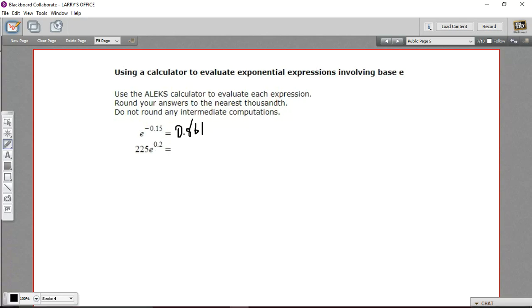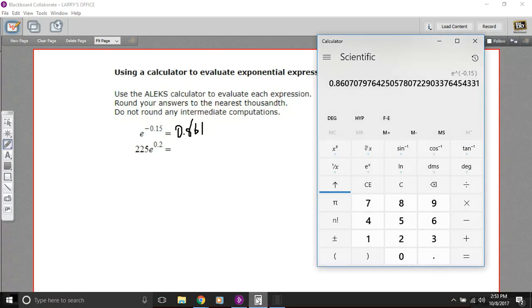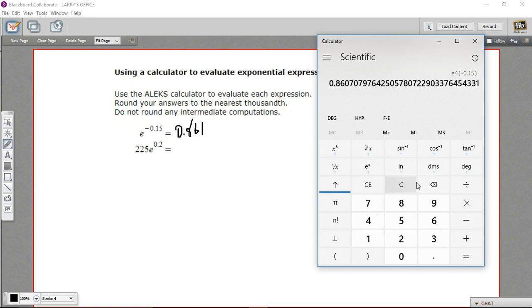So let's try that. I'll use the Windows calculator for this one. You should use whichever one you think is easiest. So I've got my e to the x still up here, so I'm going to punch in 0.2 and then hit e to the x. And then we're going to multiply that by 225.